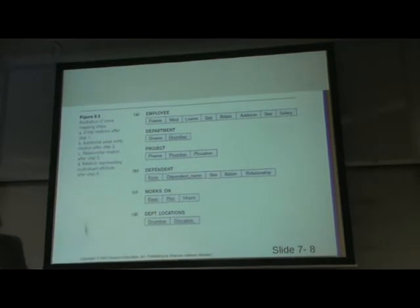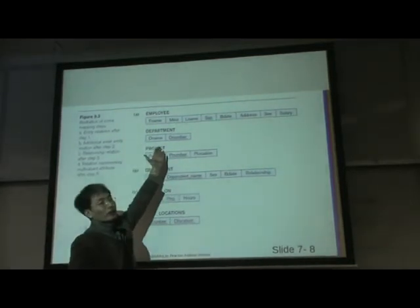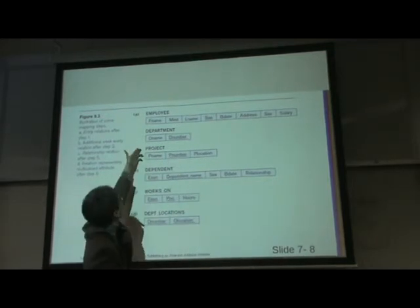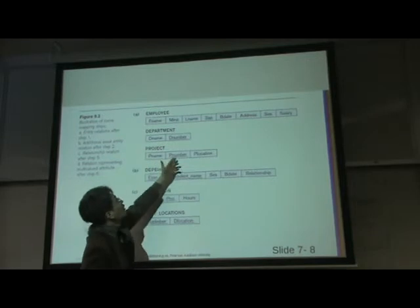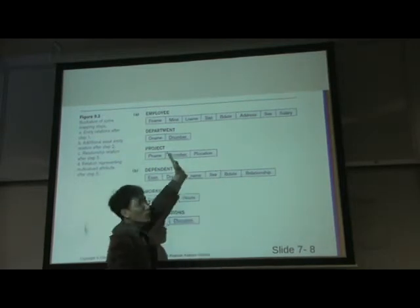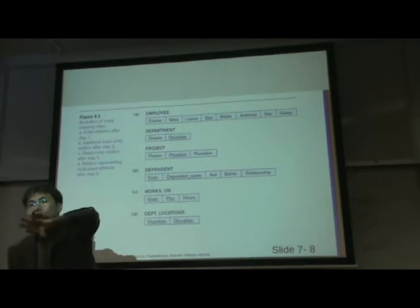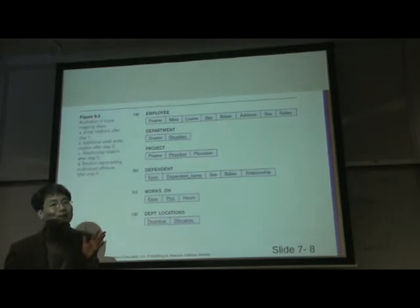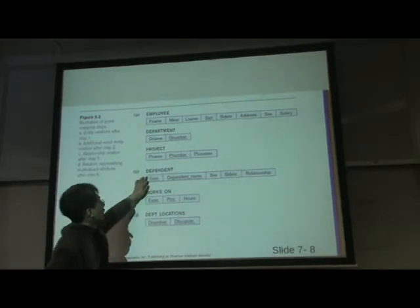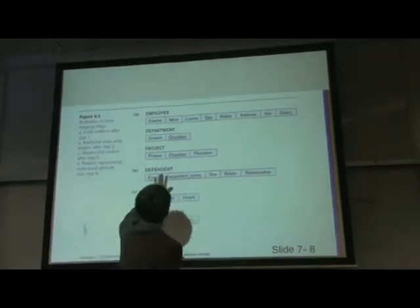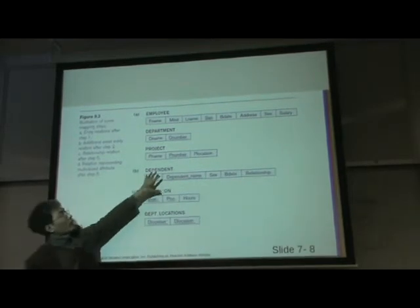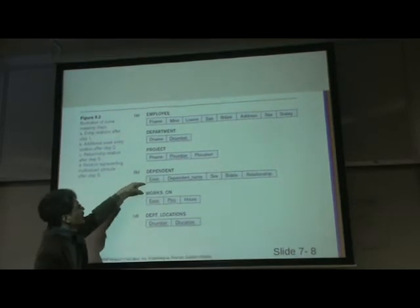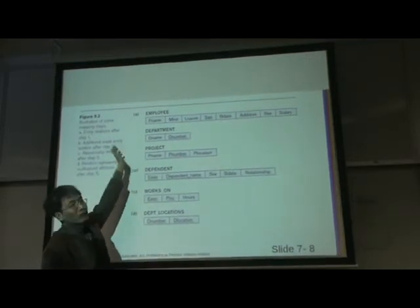This is the current result. We created and converted the strong entities — employee, department, project — into relations, each with a primary key and with each attribute converted to columns, except multi-valued ones. The dependent as a weak entity can have a primary key by borrowing, connected by a foreign key.